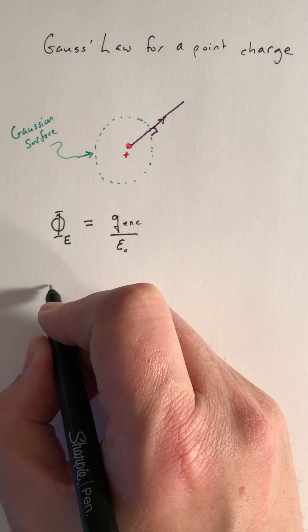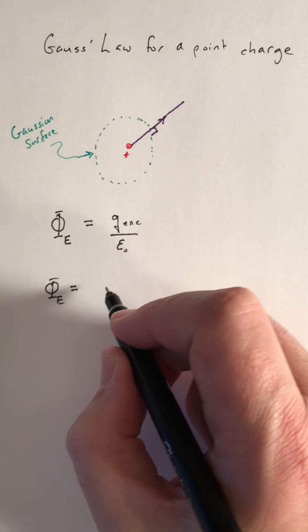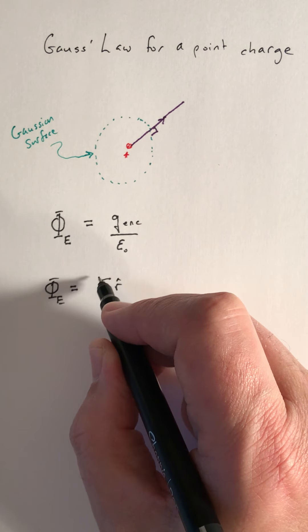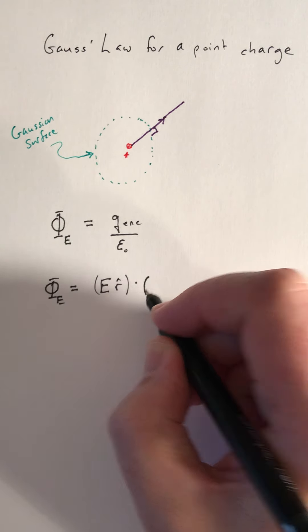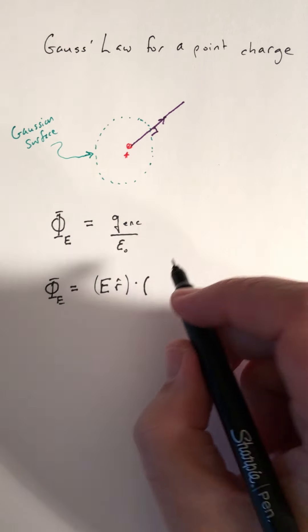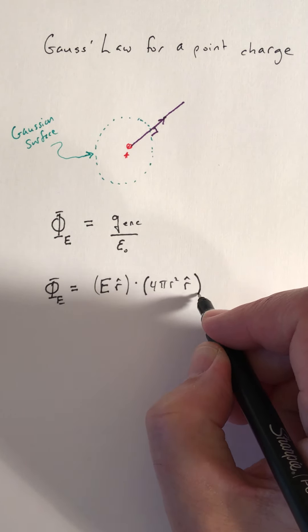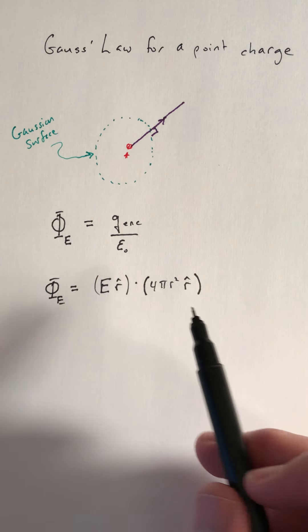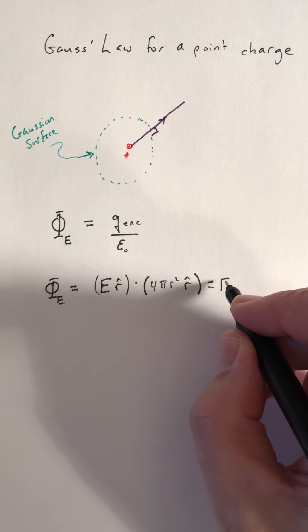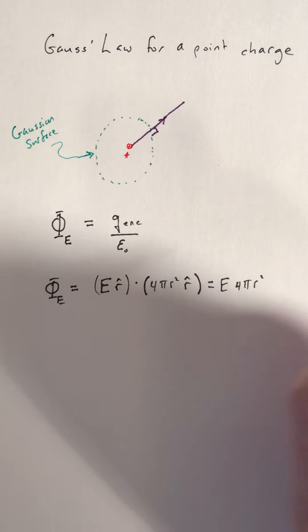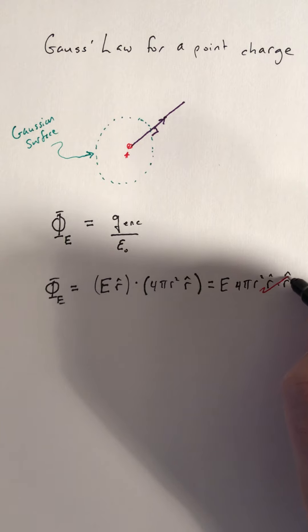For the flux of the electric field, the electric field is going to point radially away from my positive point charge, and the surface area over the sphere is going to be 4πr², and the outward pointing normal to the surface of the sphere is also going to point in the r̂ direction, so in the radial outward direction. So this is going to give me magnitude of the electric field times 4πr² r̂ dot r̂, and those are parallel to each other, so r̂ dot r̂ just gives me one.